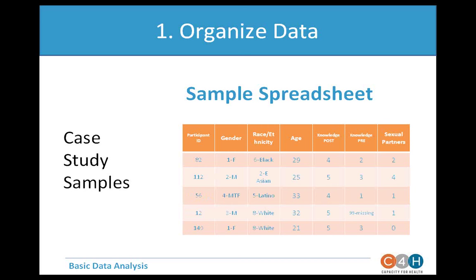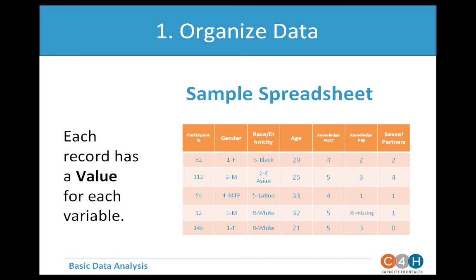Here is an example of several surveys filled in. Each record has a value for the variable — for example, participant 112 has a value of East Asian for race/ethnicity. Each cell holds one value. A best practice is to assign numbers to words: gender female is assigned number 1, race/ethnicity black is assigned number 6. This makes it easier to handle information, find frequencies, and sum up information.